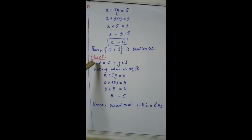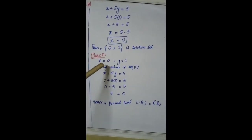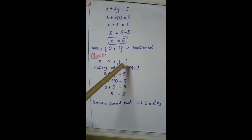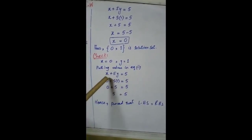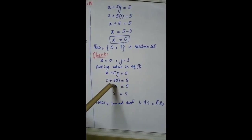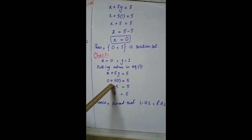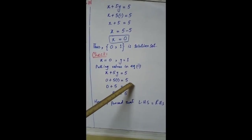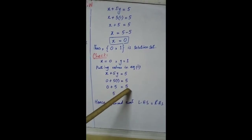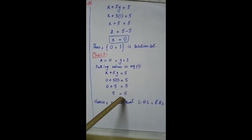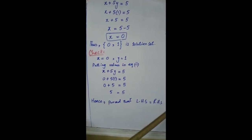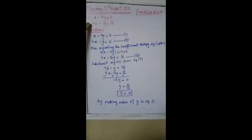Check: x = 0, y = 1. Putting values in equation 2: x + 5y = 5 → 0 + 5(1) = 5, and 5 = 5. Hence proved that left-hand side is equal to right-hand side.